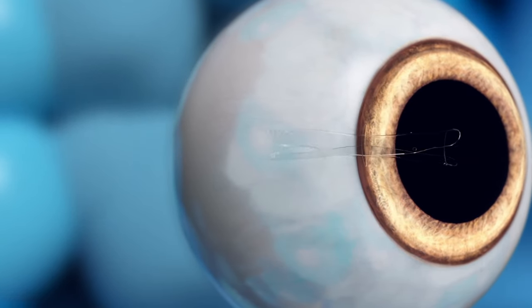Step two: the Evo ICL lens is folded and inserted through this small opening.